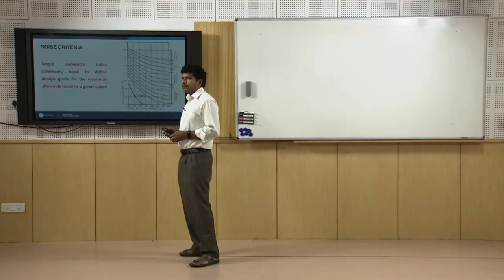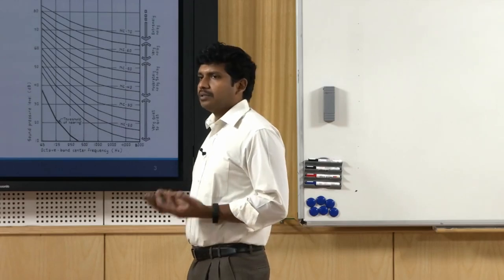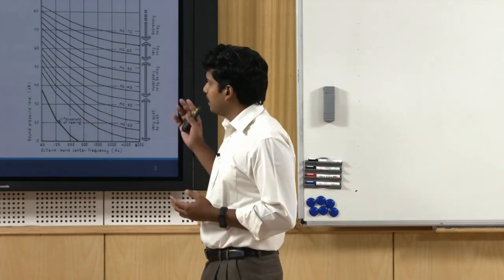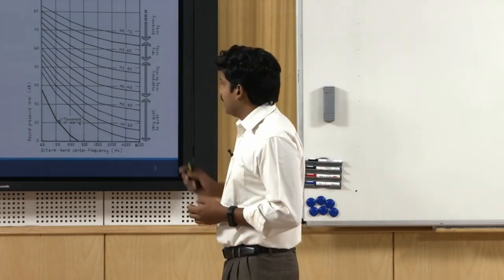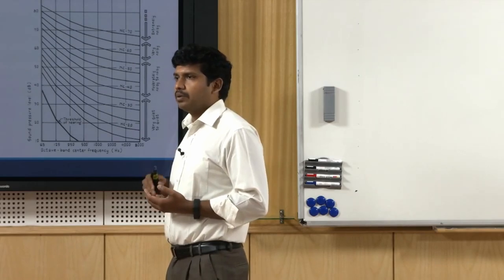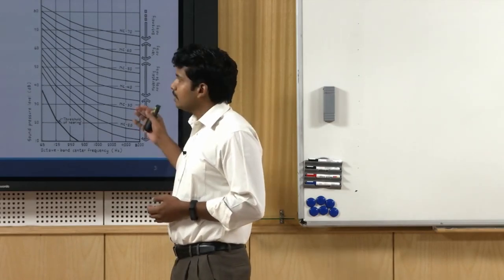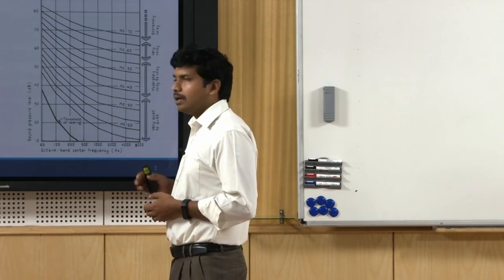Many standards define NC as NC 30, NC 40, NC 45 — a common indicator found in most international standards. Depending upon the type of space, what activity happens there, and what acoustic quality is required, this noise criteria varies.